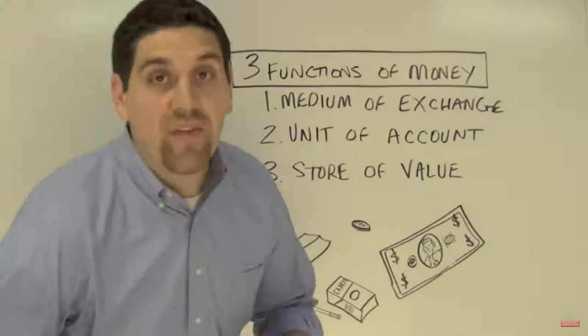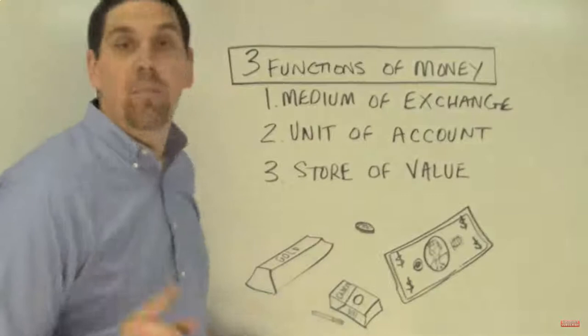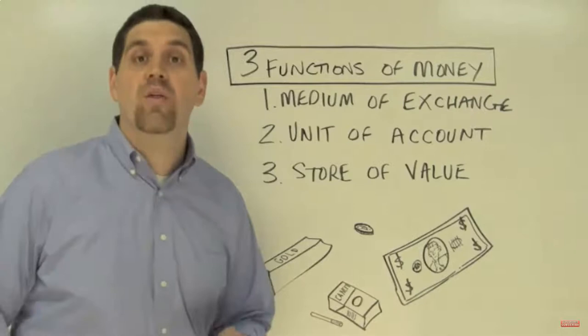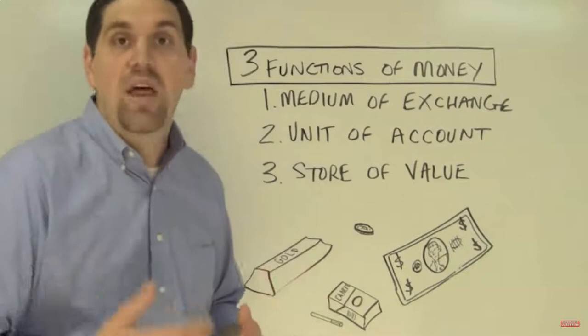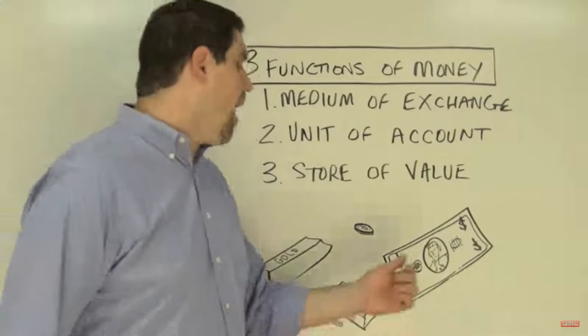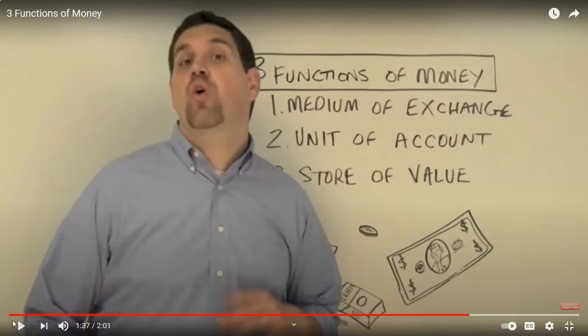Commodity money — like gold and cigarettes — has intrinsic value; you can use it for something other than money. Fiat money — like currency — has no other value and cannot be used for anything else. No country in the world is still on the gold standard, meaning money doesn't represent a set amount of gold the government owes you. If you hand the government a $20 bill and ask for something else worth $20, they'll give you back a $20 bill. Commodity money is used less than fiat money today.